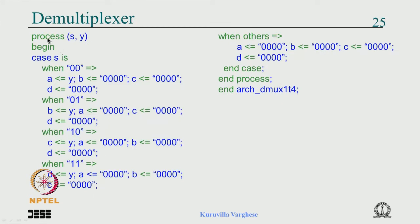Since case/when is a sequential syntax you have to use a process. In the sensitivity list, y and s must be present. We use the select line — for all values of the select line we specify the output, which is the most natural thing for a multiplexer or demultiplexer. So: process(s, y) — case s is, when "00" a gets y, and we have to specify b, c, d everything. We can say when others everything is 0, and we can combine "11" with others.